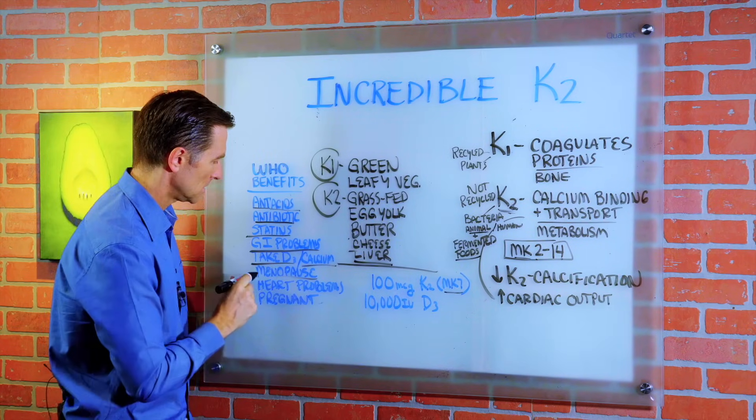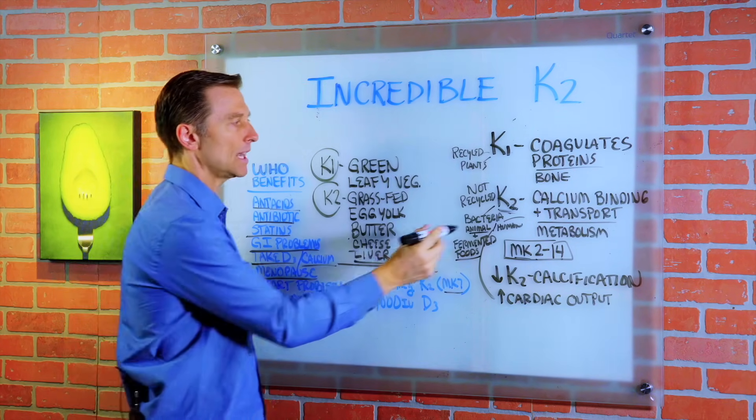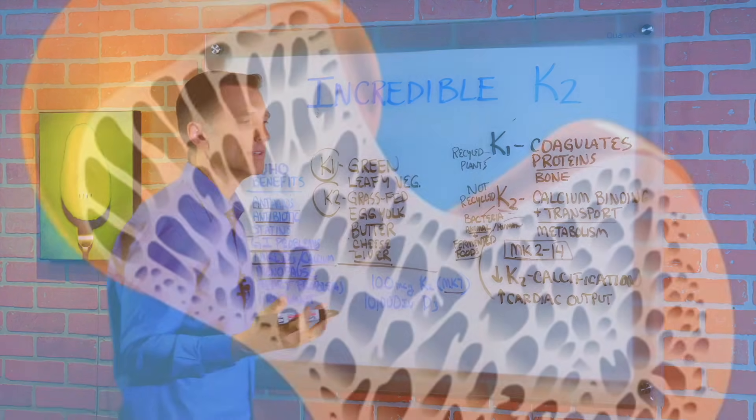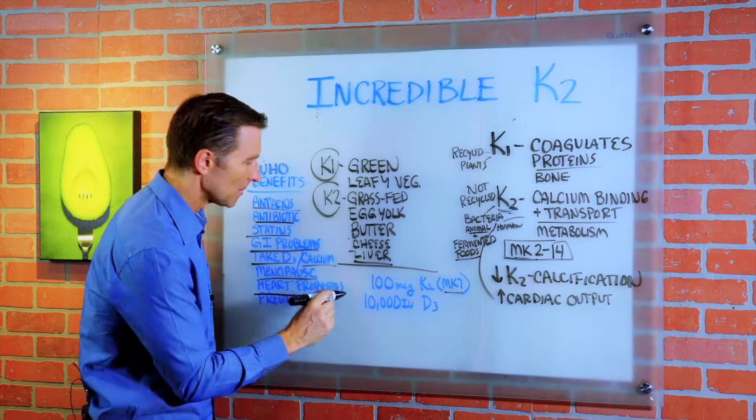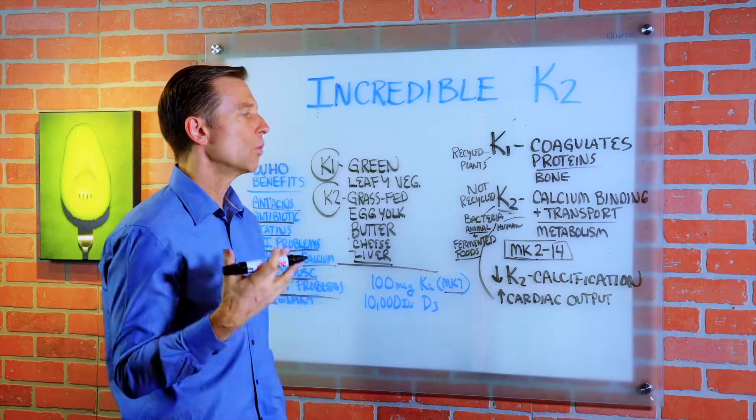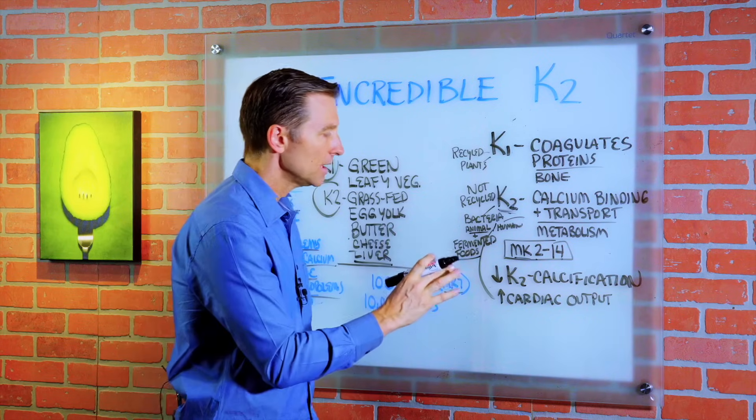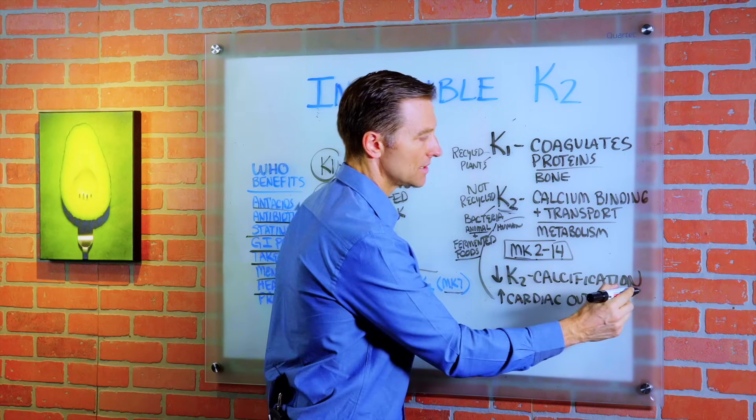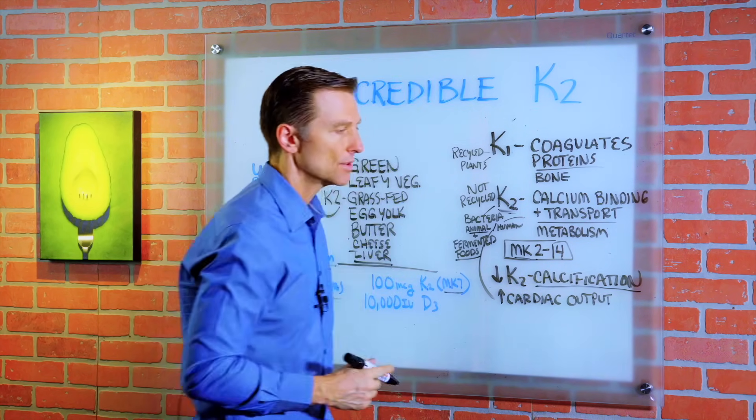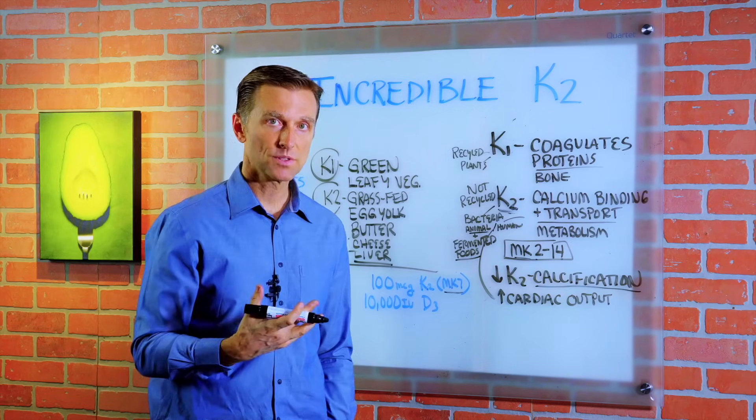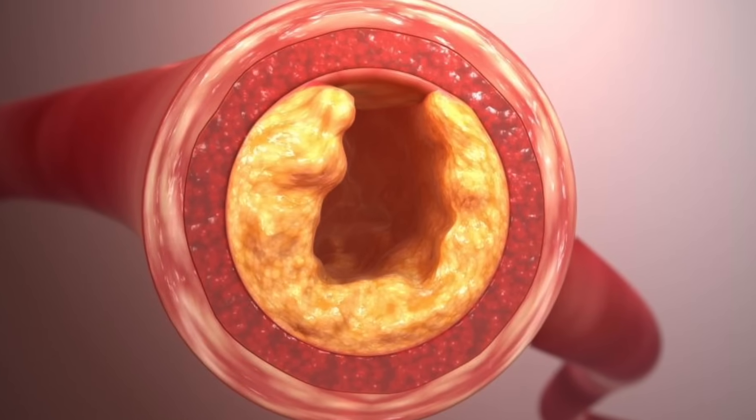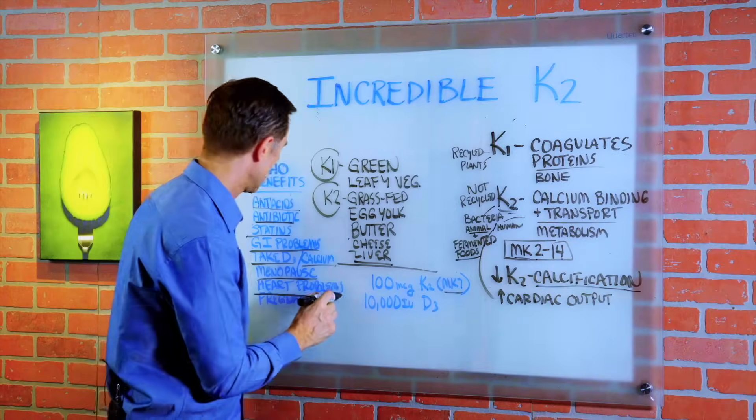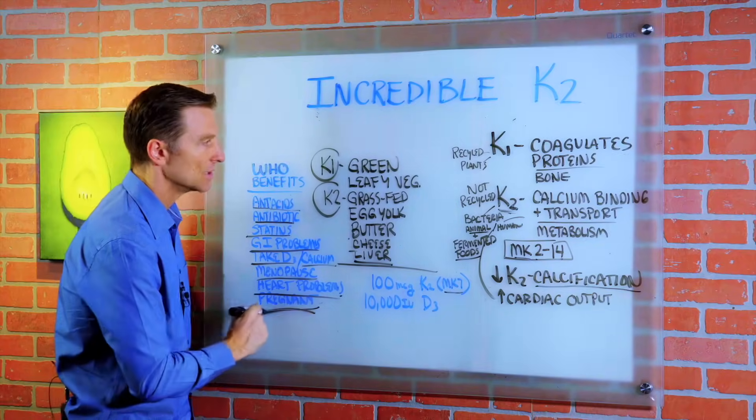If you're menopausal, you need K2. Why? To actually prevent bone loss. Heart problems, cardiovascular weaknesses. The main thing about K2 is it actually prevents calcification through the arteries, the blood vessels, and the soft tissues. So it can work to help keep the arteries free of calcium deposits. And also if you're pregnant, you need K2. Very, very important.